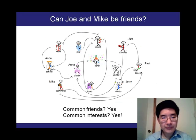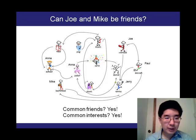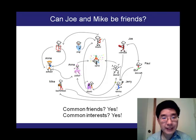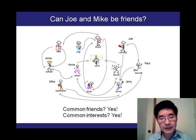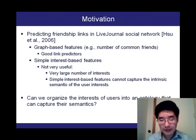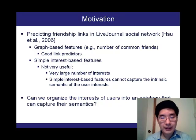The basis for actually determining whether two candidates — say Joe and Mike — are friends is whether they have any friends in common and whether they have any interests in common. What we're interested in doing is winnowing out the actual interests that are significant, and what we'd like to do is predict friendship links in the LiveJournal Social Network.